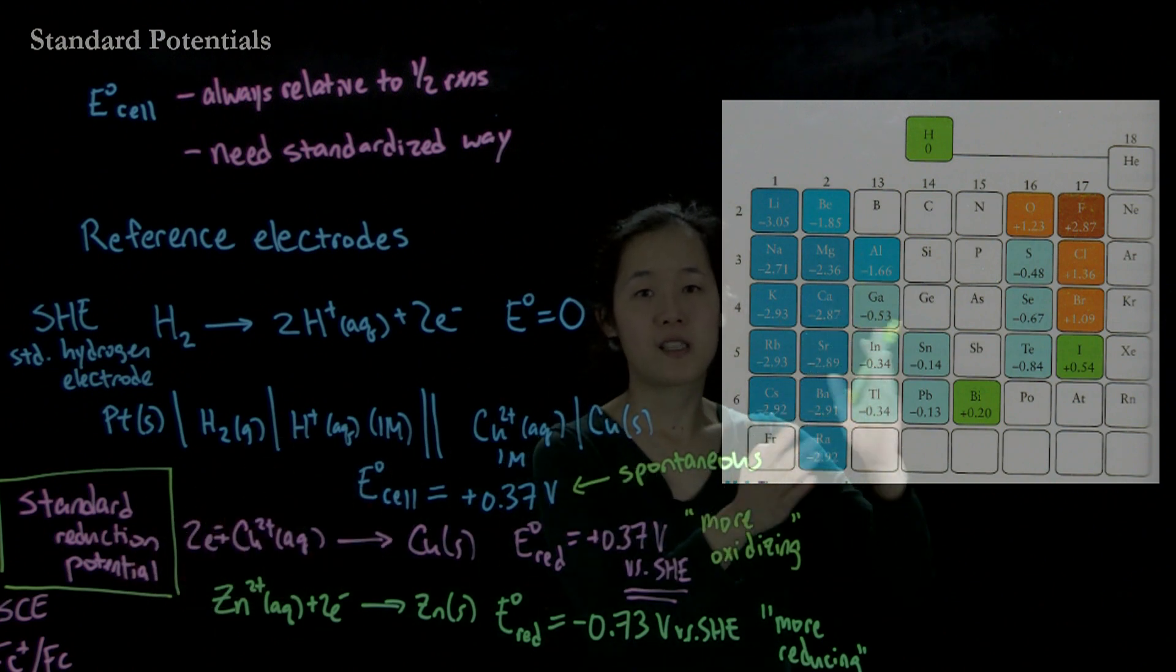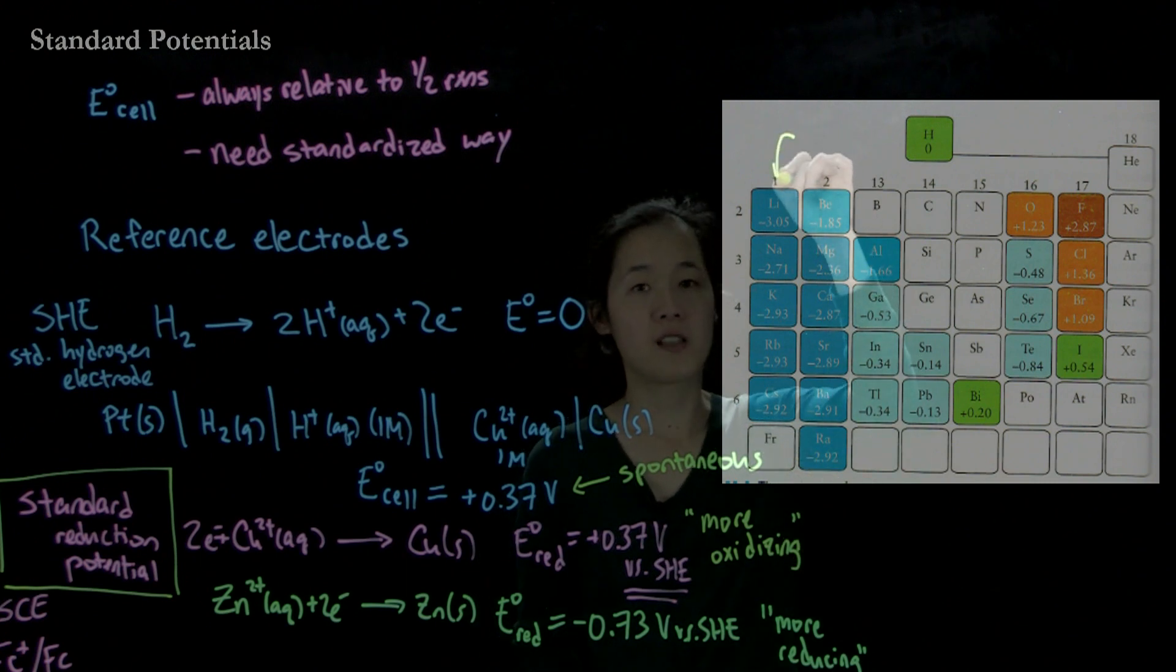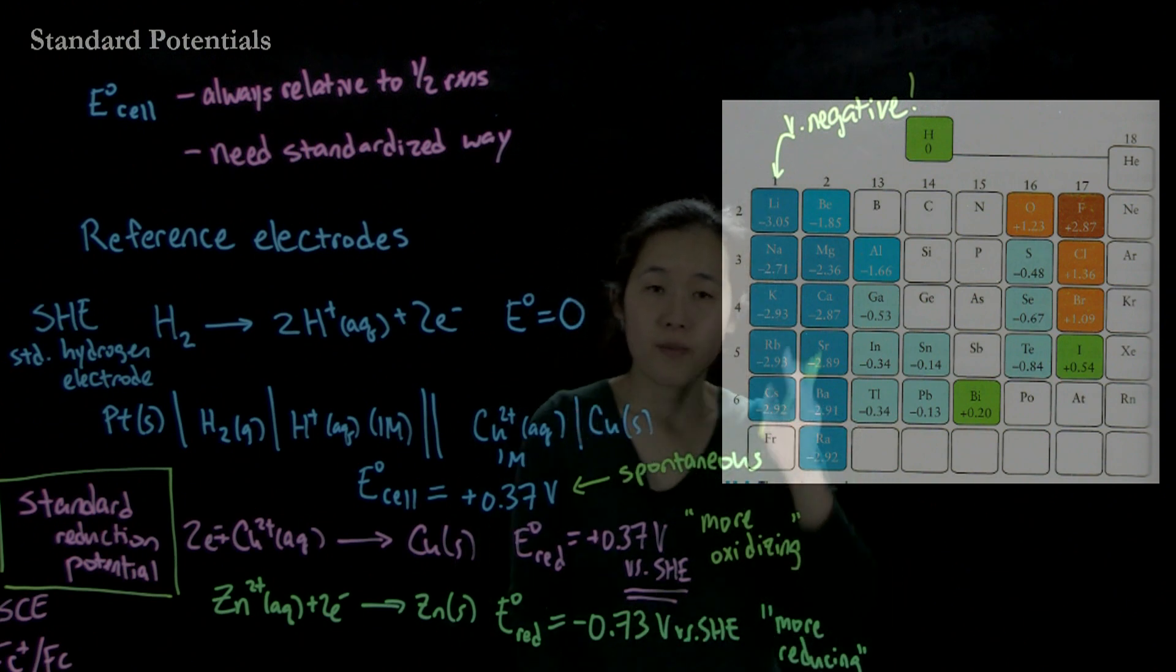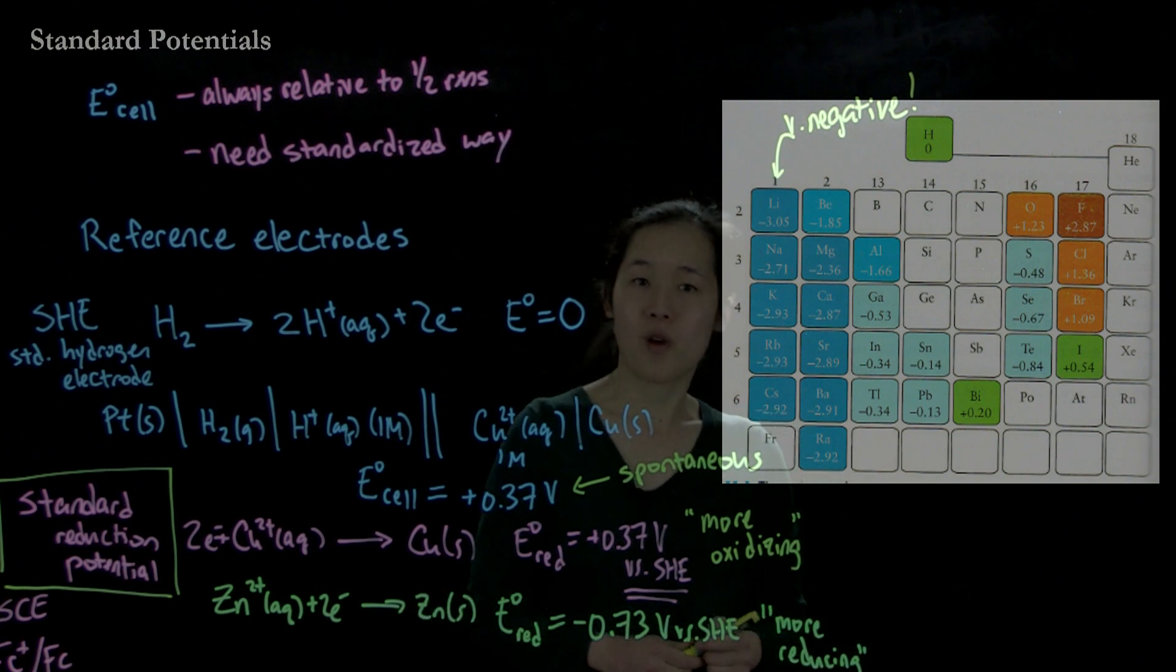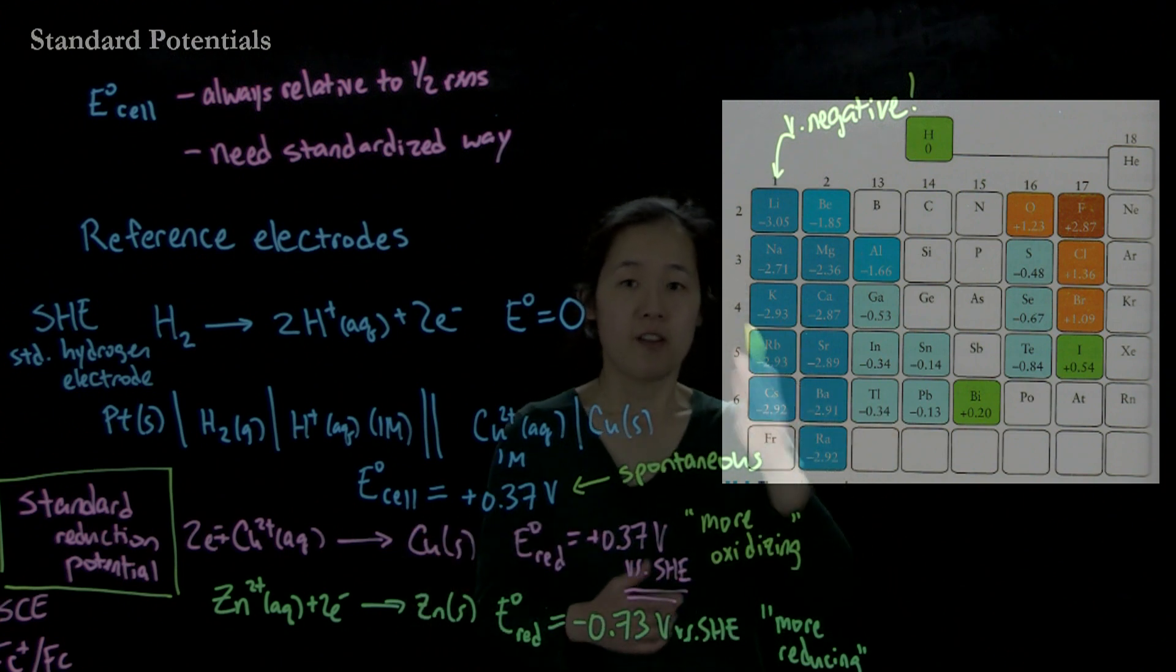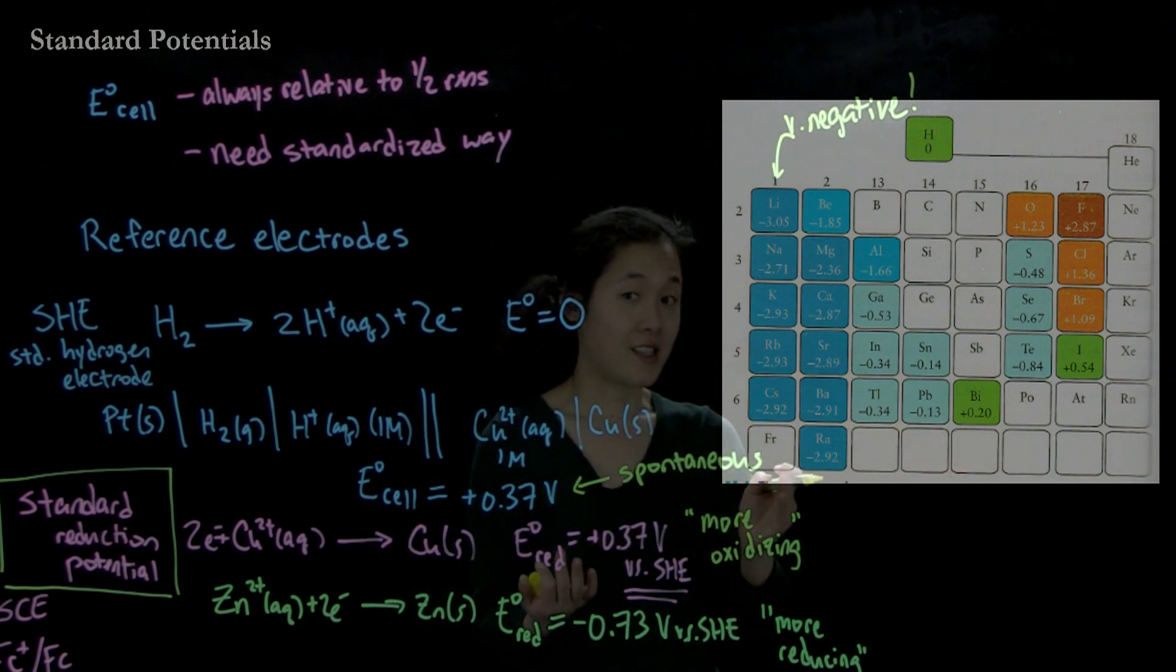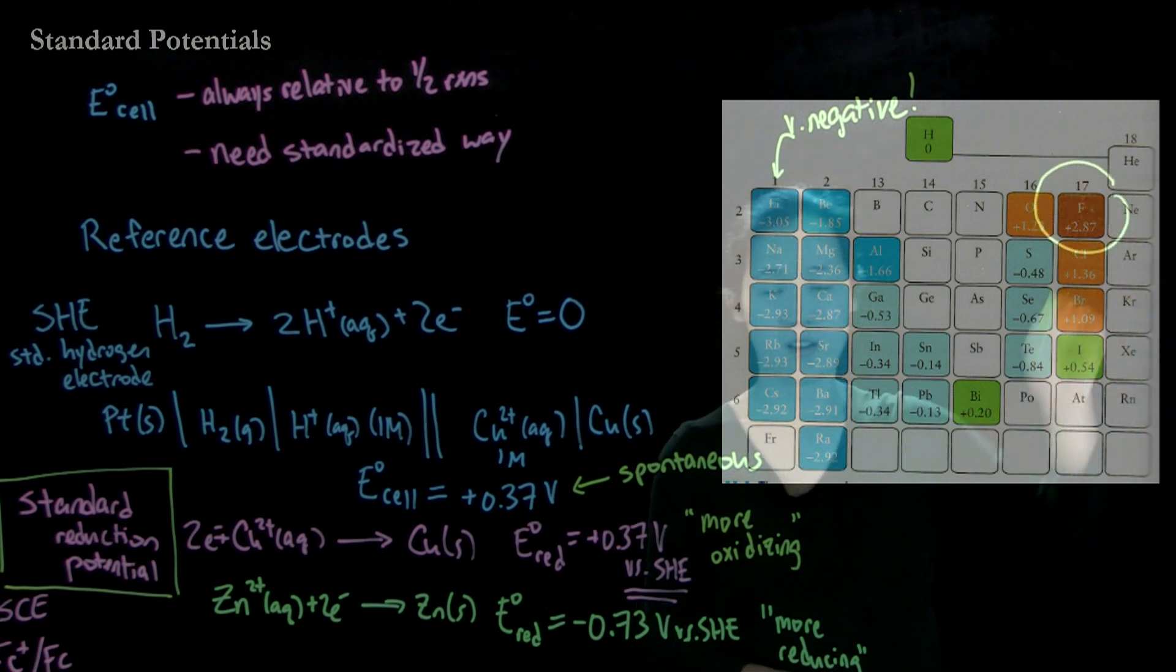So over here, we're comparing across the periodic table our standard reduction potentials for each of these different elements. So you can see on the left here, these are our alkali metals, so these are very negative. So what this means is that to reduce potassium ions or sodium ions to sodium metal is very, very unfavorable. As you know, when you add water to sodium or to potassium, you generate hydrogen gas. So that's why these are very negative. And then as we go across the periodic table, you can see with electronegativity, the more electronegativity it is, the more it wants to pull electrons toward itself. So it wants to oxidize things. So in this case, you can see over here, the most positive one over here, F.